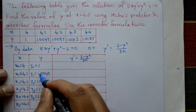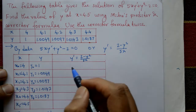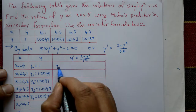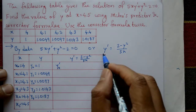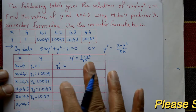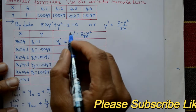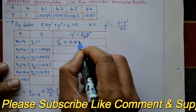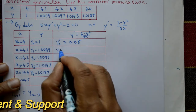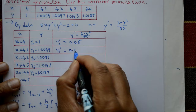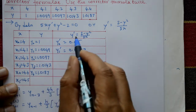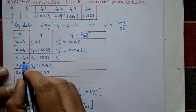First, construct the derivative table. We need y0', which means the first derivative. Taking x0 and y0, substitute into the equation y' = (2 - y²)/(5x), we get y0' = 0.05. Then substituting x1 and y1, we get y1' = 0.0483.